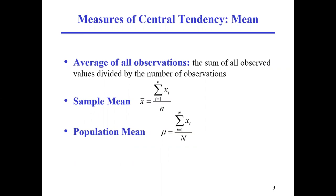First, let's talk about mean. Mean is the most commonly used statistic for central tendency of your data sets — it is the average of all observations, the sum of all observed values divided by the number of observations.